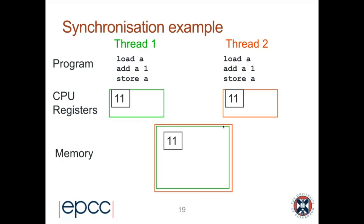So what happened? We started with the value 10, both threads tried to add one to it, but instead of ending up with 12 we ended up with 11. This is an example of a race condition. Some different orderings of those instructions would have been fine — as long as thread one executed its load, add, and store before thread two executed its load instruction, everything would have been okay. When we have updates like this, we must synchronize the threads to make sure only one thread at a time can modify shared variables — otherwise we have that nasty non-deterministic behavior.